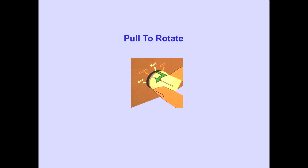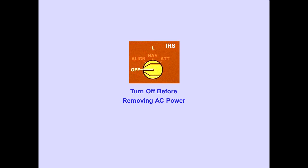The NAV position is detented to prevent unintentional movement out of NAV. When turning an IRS off, you must pull the selector to rotate it out of the NAV position. To save the APU battery, turn the IRS off before removing AC power.